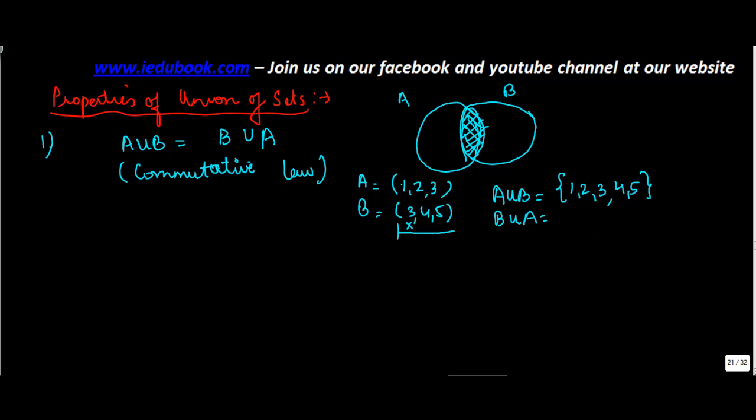How about the reverse one? B union A. So I will write everything which belongs to B union A. So we add everything from A: 1, 2, 3. So 3 I don't write. Now if you see the two of them, both of them are equal.